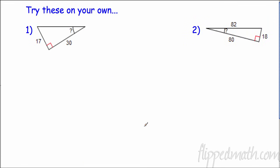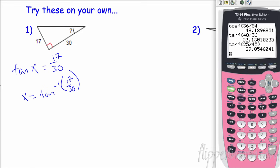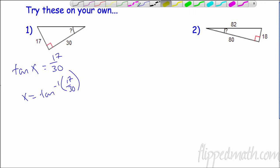So take a second, pause the video, try these on your own, come back and see how you did. So here we go. I have opposite over adjacent, so that's tangent. Tangent x equals 17 over 30. So x equals inverse tangent of 17 over 30. Let's see what we get. Second tangent, 17 divided by 30, 29.5. That means that rounds to 30 degrees if we're trying to find nearest whole degree. So x is 30 degrees.